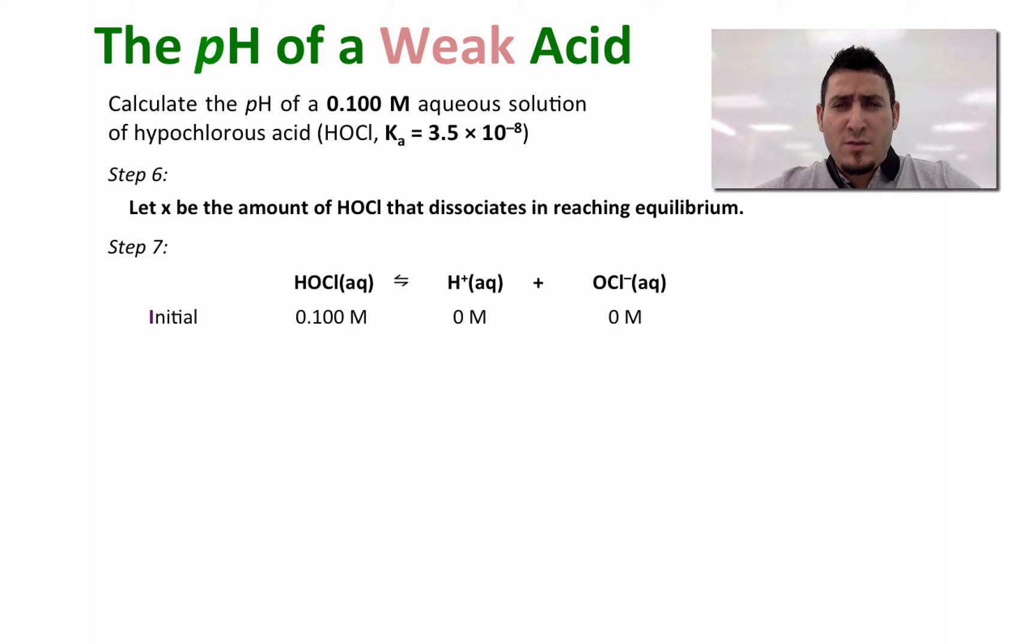After x molar of HOCl dissociates, we will have x molar of H+ produced and x molar of OCl- produced. At equilibrium, the equilibrium concentration of HOCl will be 0.100 - x molar, the equilibrium concentration for H+ will be x molar, and the equilibrium concentration for OCl- will also be x molar.